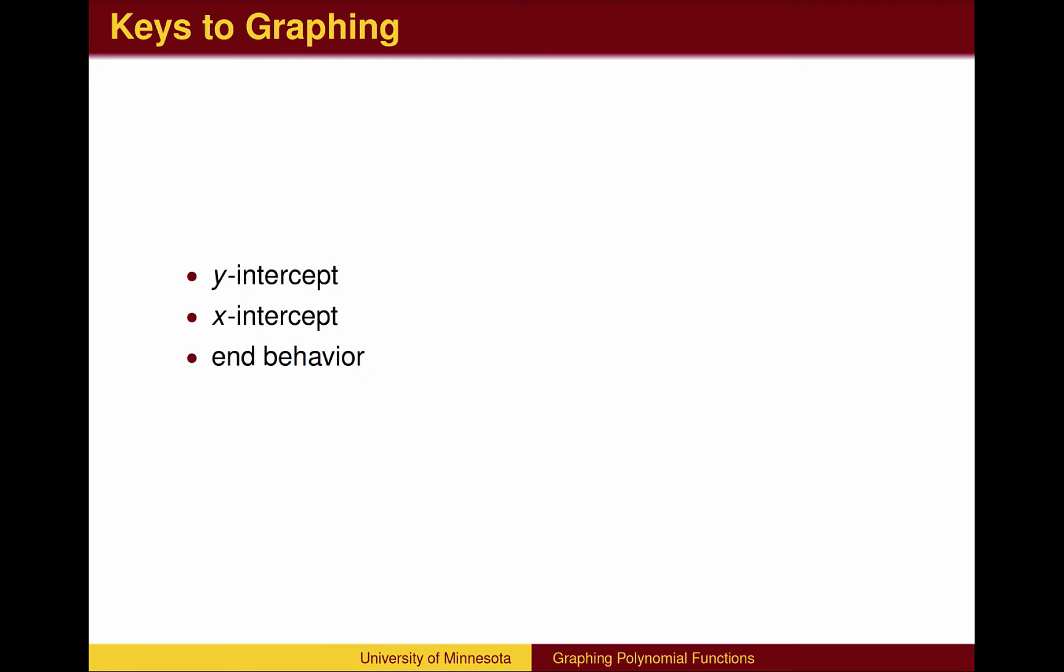There are three key pieces of information that help us graph polynomial functions: the y-intercept, x-intercepts, and end behavior.